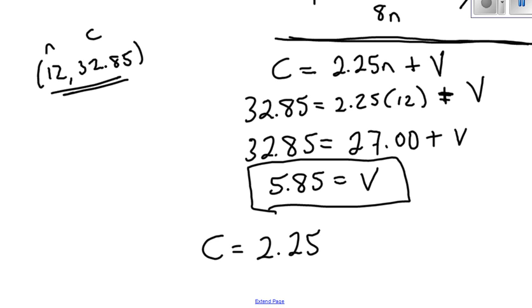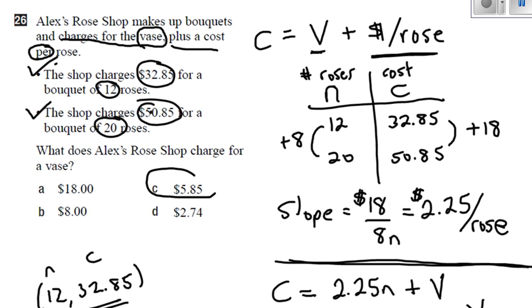So to buy flowers at the store, you're going to pay $2.25 per rose and $5.85 for the vase they sit in. There's my answer. $5.85. Excellent.